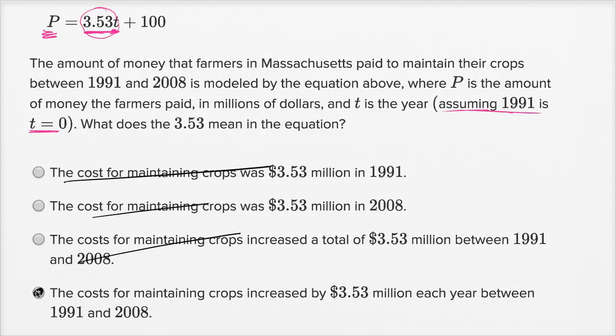That is exactly right. Every time t, if we go forward a year, t increases by one, and we're going to have 3.53 times that one higher t, so we're going to increase the whole P by 3.53. That kind of rhymed.